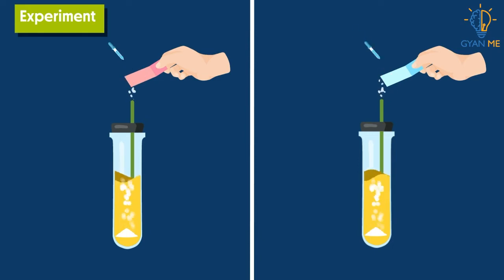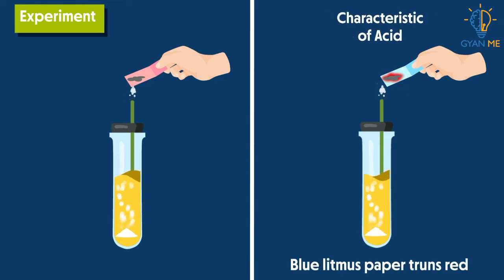Now wet the litmus paper with some distilled water and put it over the gas fumes. Is there any color change of litmus paper now? Yes, this time blue litmus paper turns red, which is the characteristic of acids.